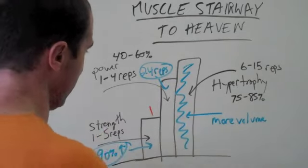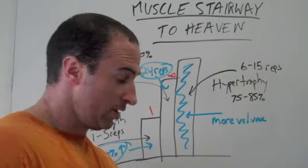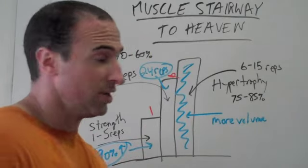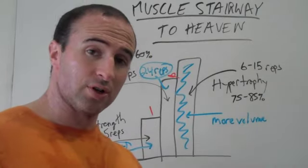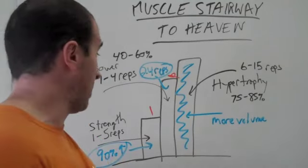Then we've got power, the next step: 1 to 4 reps per set, 40 to 60% of max. Now that seems pretty low in loads. The reason being, you've got to exert maximum velocity on that bar for power development.